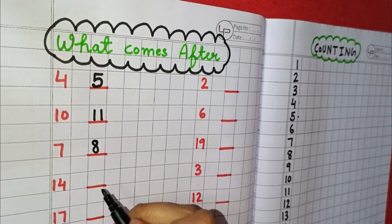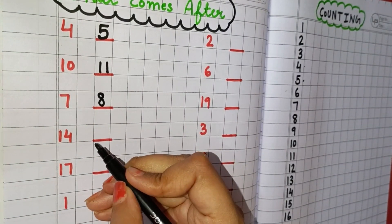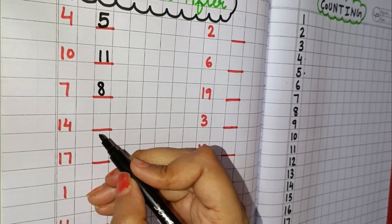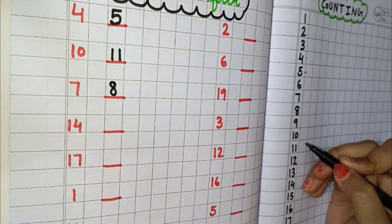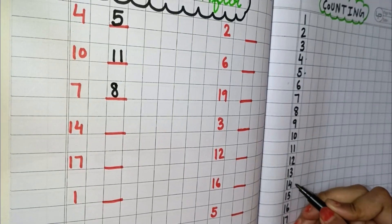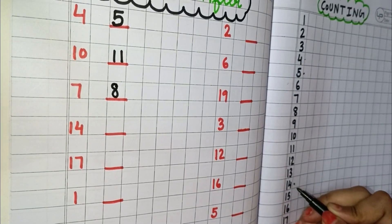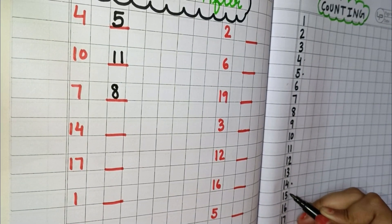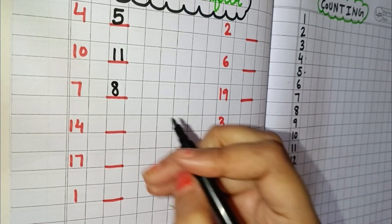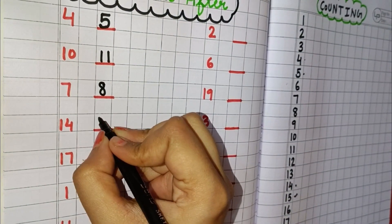So, you will write here 8. Now, the next number here is 14. Find where is 14. This is 14 and the number next to 14 is 15. So, you write here 15.